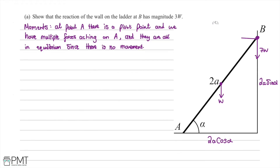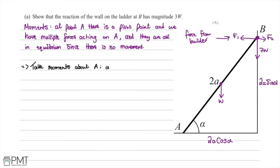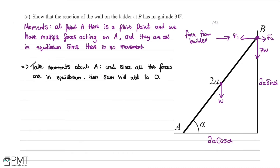We have the force from the wall which we'll call F1, and an equal and opposite force in the other direction which we'll call F2. We then take moments about A, and since all the forces are in equilibrium their sum will add to zero. We summarise the three forces: the builder's weight, the weight of the ladder, and the pushback force from the wall.